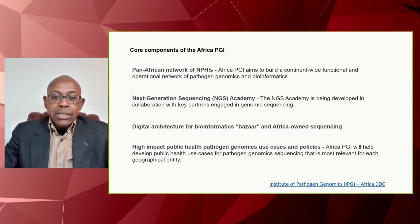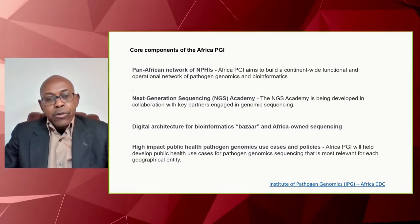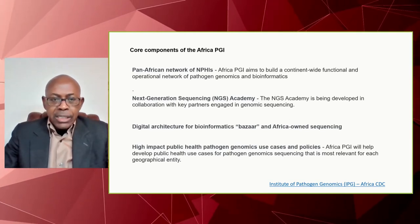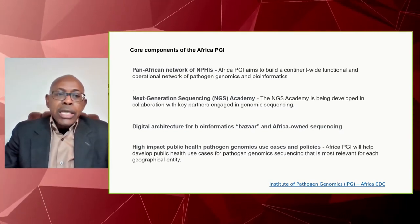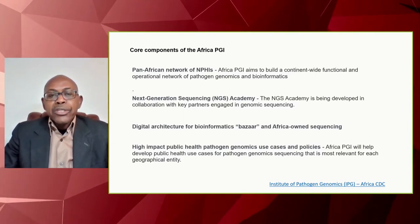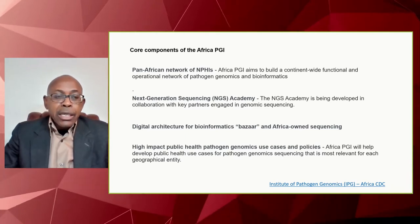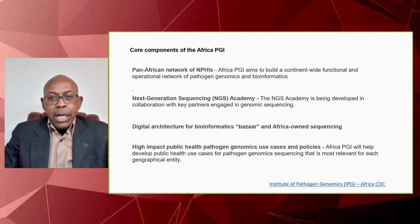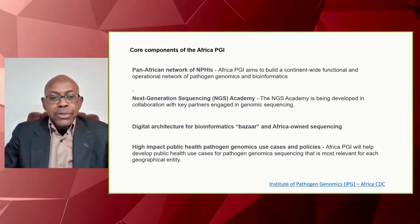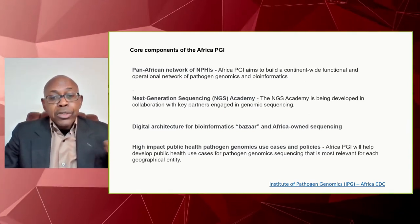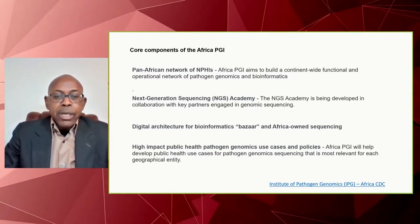The core components of the African pathogen initiative are to build a continent-wide functional and operational network of pathogen genomics and bioinformatics. I cannot overemphasize the need for bioinformatics — a lot of the sequences done are being interpreted locally across African countries as a result of investment in bioinformatics. H3 Africa has helped establish the H3 Africa Bionet, located in Cape Town with nodes in about 30 African countries. The Next Generation Sequencing Academy is also part of this initiative, developing key partnerships with companies like Illumina and training young men and women to lead the next frontier in genomics for public health pathogen sequencing.